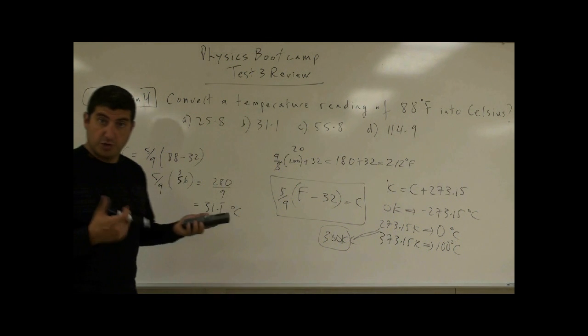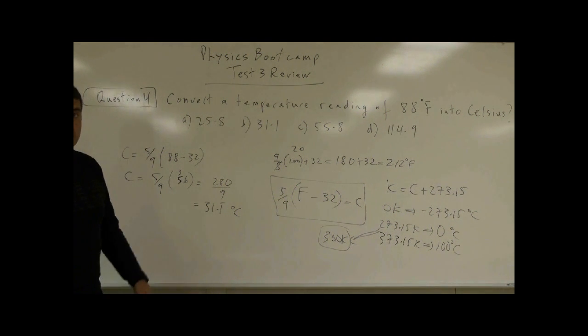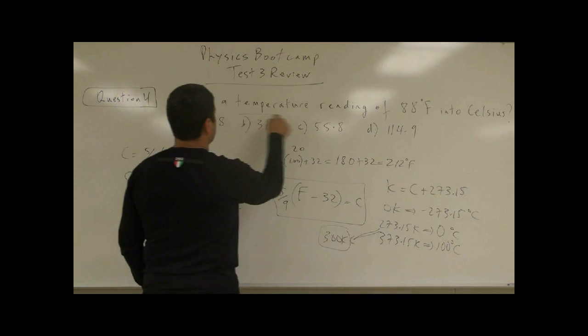So 88 Fahrenheit, which is pretty warm weather, is 31 degrees Celsius. So what would that be? 31.1.